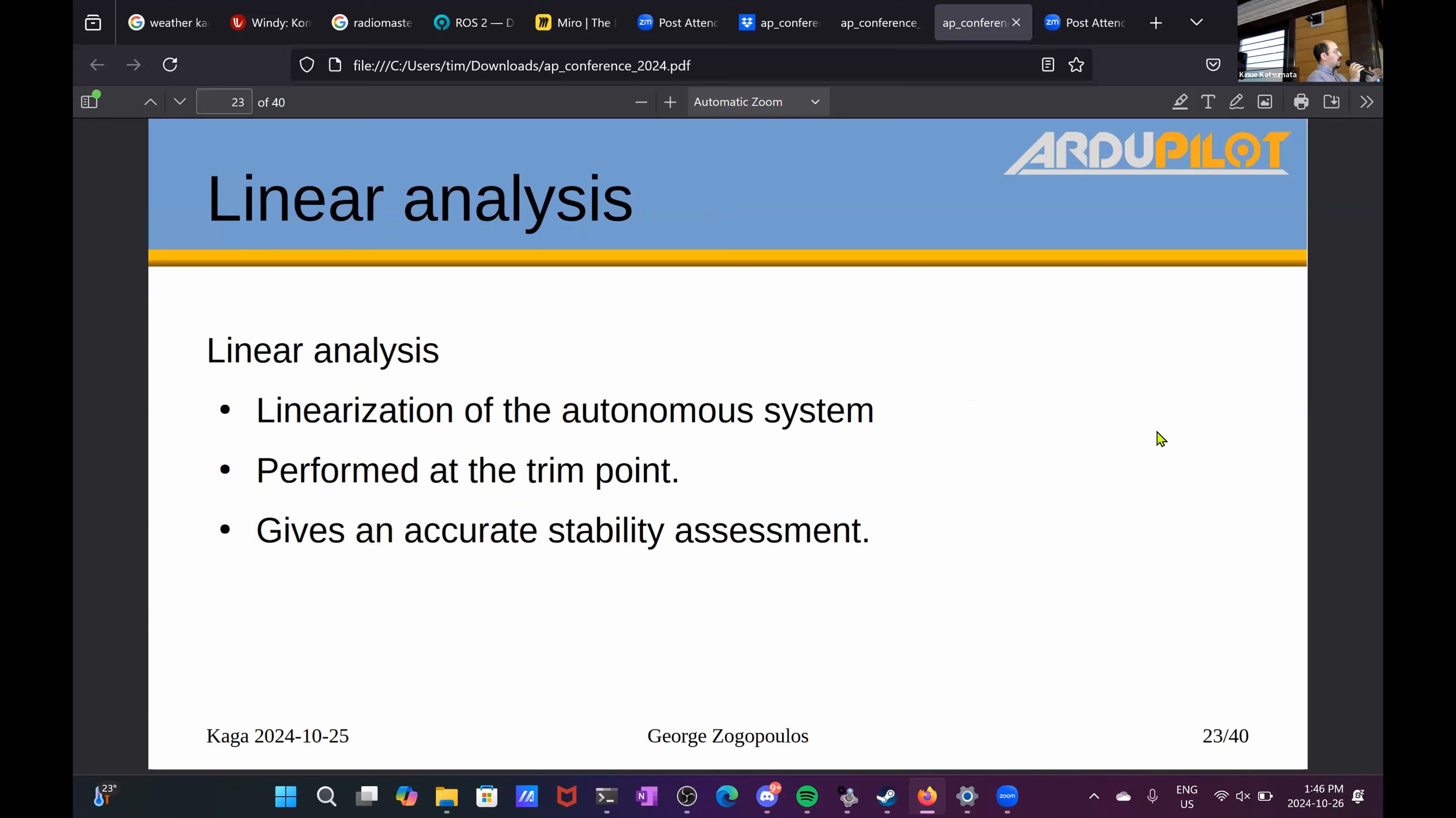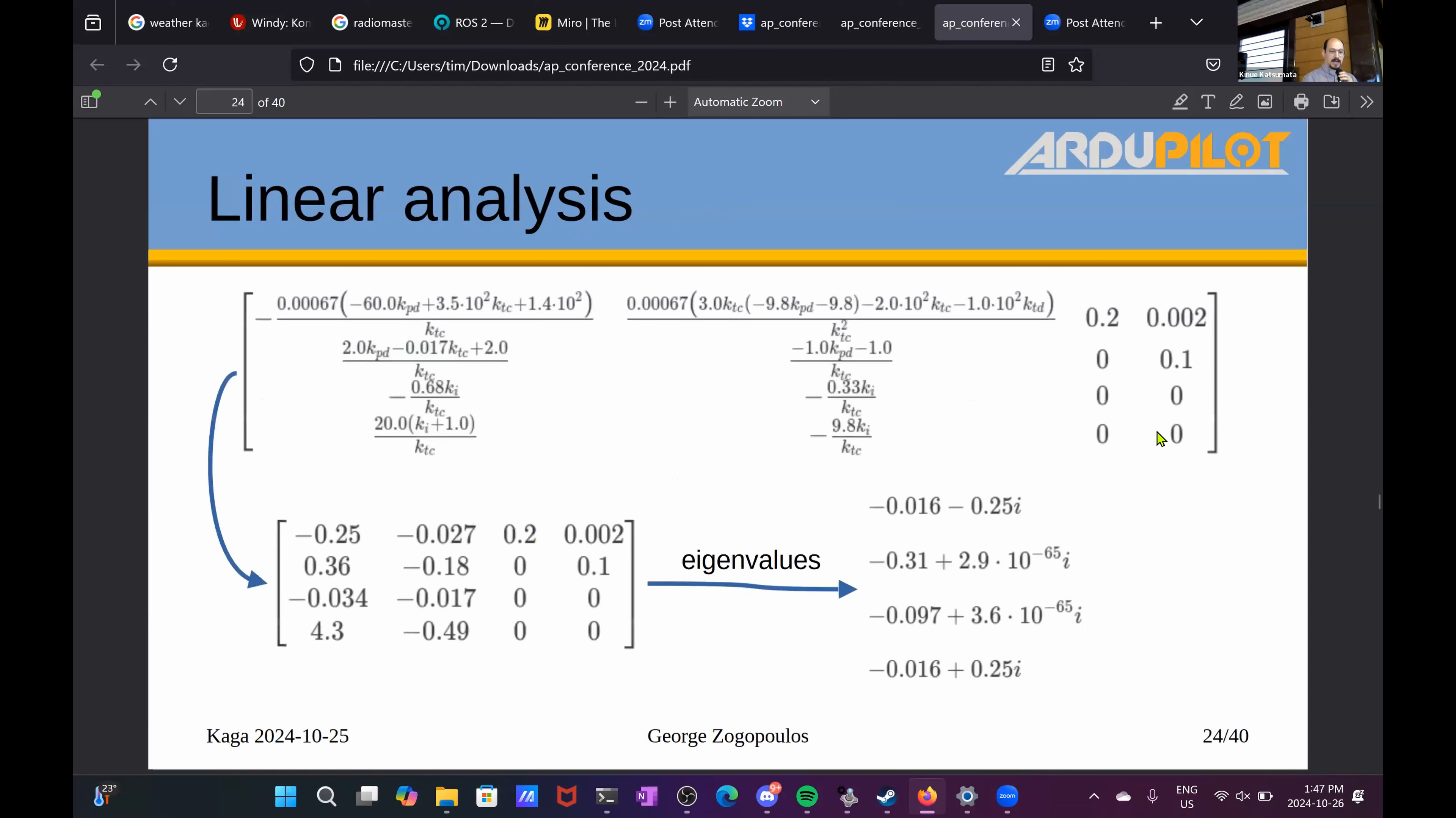And this is where linear analysis needs to come and assist us a bit to show that this trim point is actually stable. So we go through the usual steps of linearizing the nonlinear system on the trim point and try to get a stability assessment. And this is basically what you see here. It's a state transition matrix on the top. It has the TECS parameters left in as variables. I substituted the rest of the variables, masses, drags, et cetera, with numbers.